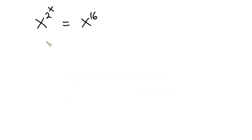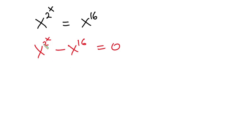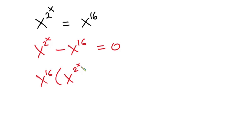First of all, I will equate everything to zero, so we have x to the power 2 to the power x, minus x to the power 16, is equal to zero. The bases are the same but the powers are different. We can factor this out: x to the power 16, times x to the power (2 to the power x minus 16) minus 1, is equal to zero.